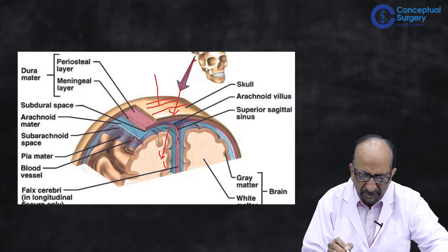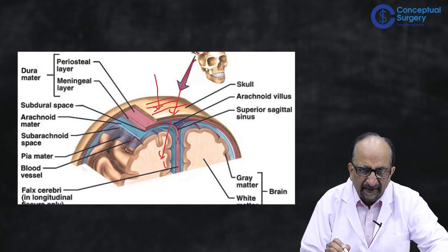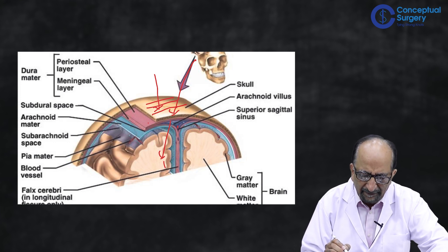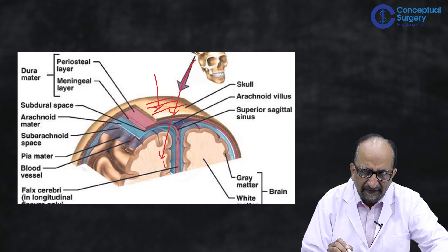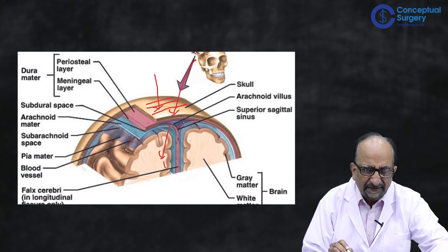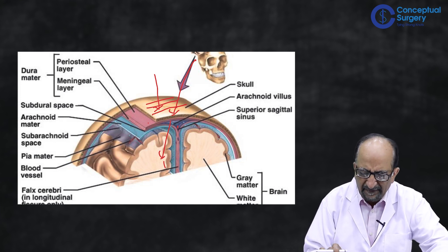For example, if an impact happens on the skull and the skull fractures, the fracture itself is a defence mechanism. The fracture takes away a lot of energy, and the energy going into the brain is far less. So when you come across a person with a head injury with a fracture, a lot of impact energy has been absorbed by the skull itself and the brain has been protected to a great degree. A fracture is actually not a bad sign — it can mean the brain itself has been saved to some degree.